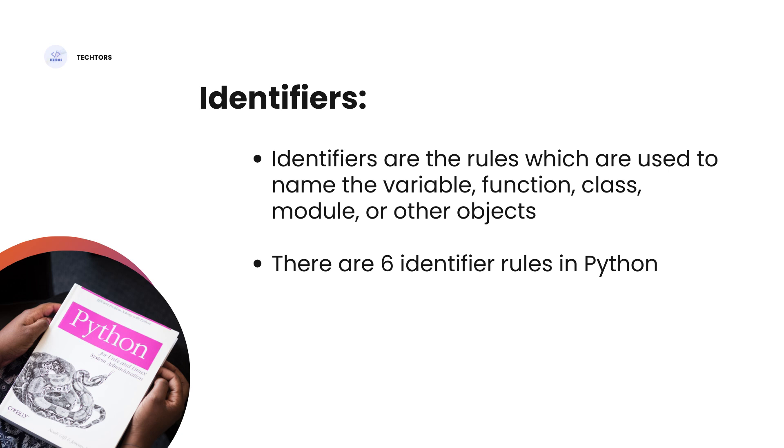Now, how to use the identifier? It is a set of rules. We can declare variables according to those rules. There are 6 identifier rules in Python.